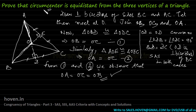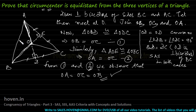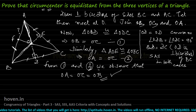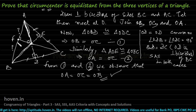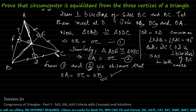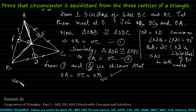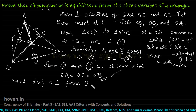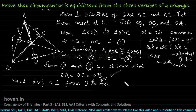Therefore, O is a point which is equidistant from all three vertices, but we haven't yet proved that it is the circumcenter. To prove that O is the circumcenter, we must prove that if we draw a perpendicular from O to AB at point F, then this side AF equals BF. If we successfully prove this equality and that the angle is 90 degrees by construction, then we can say that O is the circumcenter.